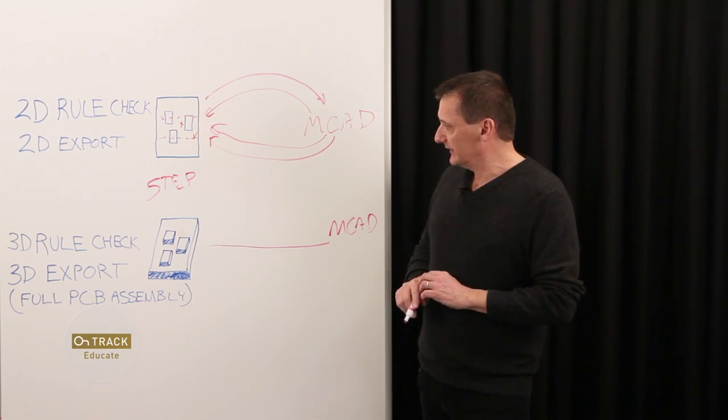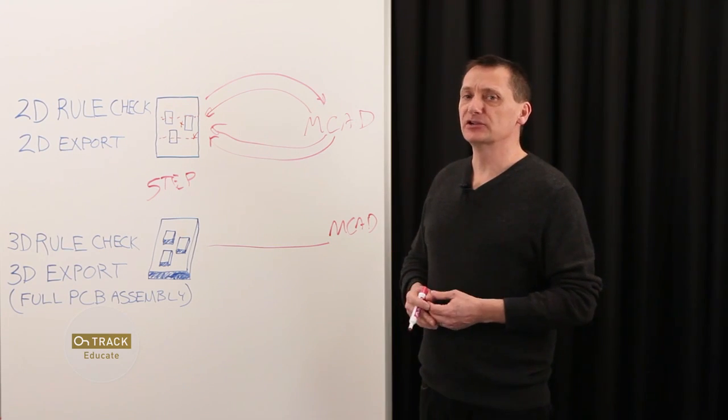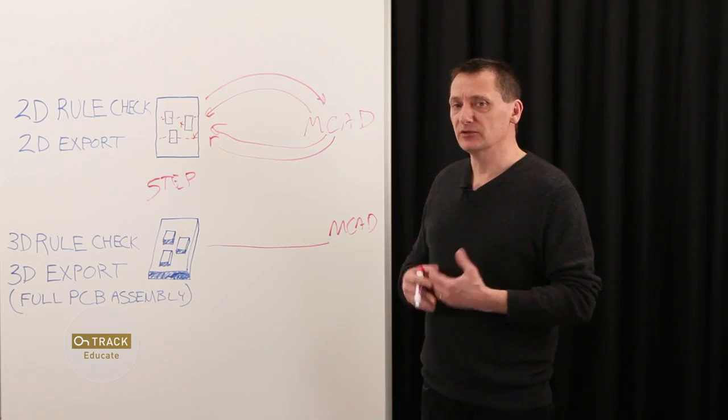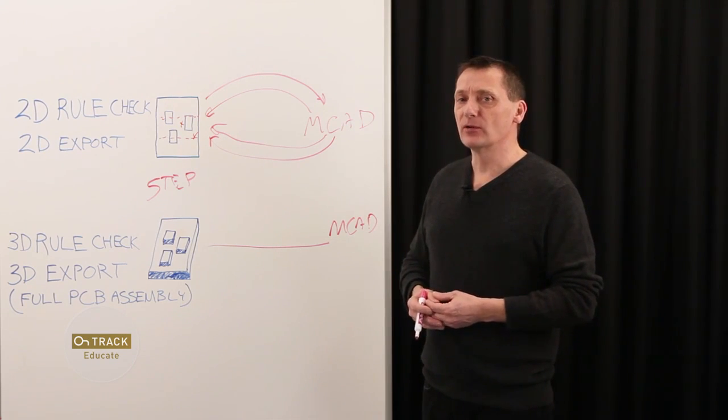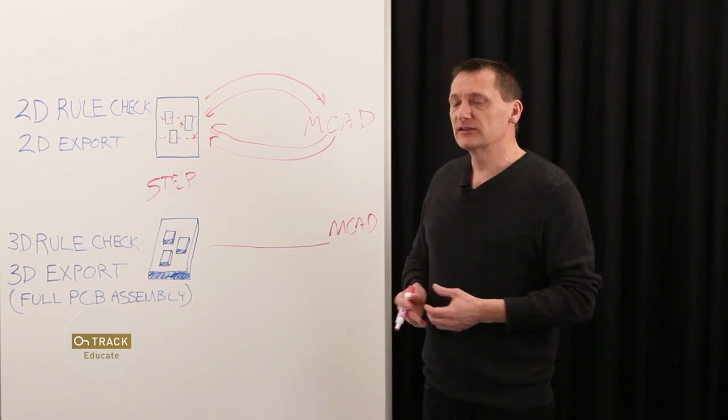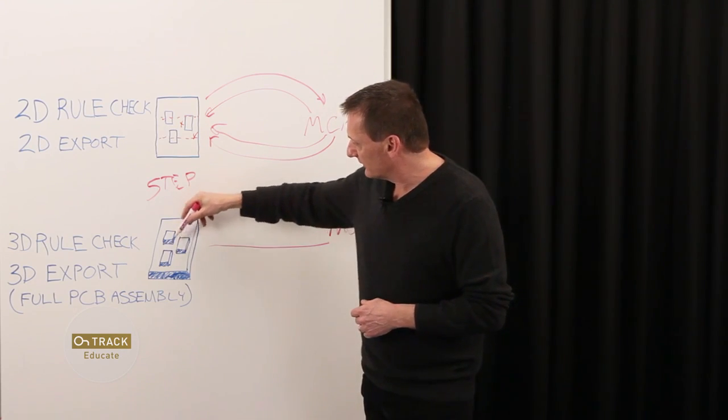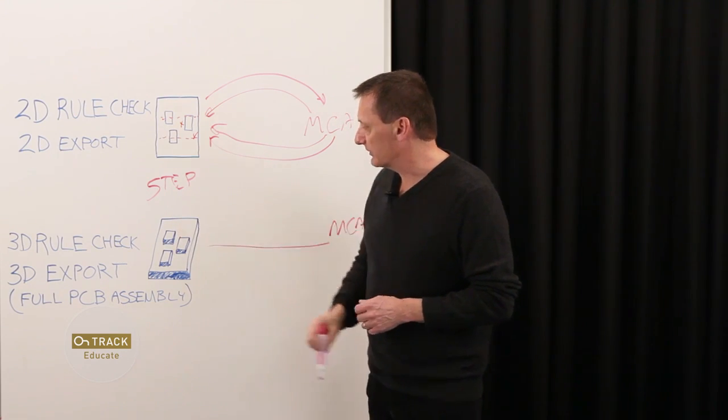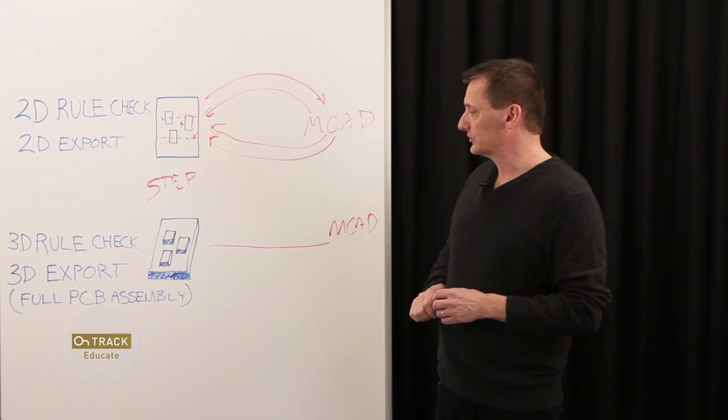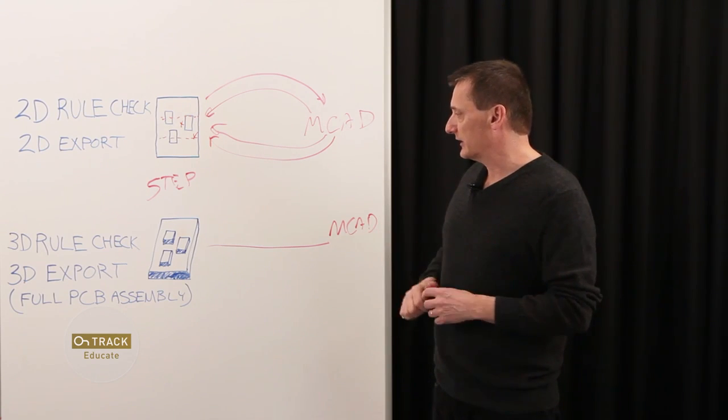In summary, what 3D gets you is early detection of very common mechanical problems. You can detect them early and fix them early before sending them on to the mechanical team. You get a constant runtime rule check where you can always be checking for interference component to component and component to enclosure. That's always-on rule checking. It's dynamic and will detect the slightest violation.